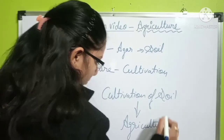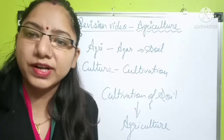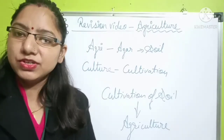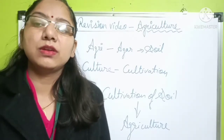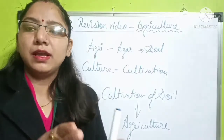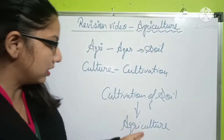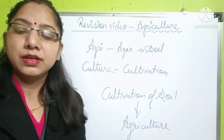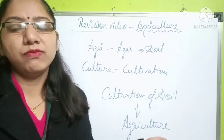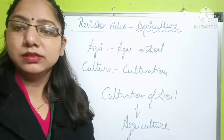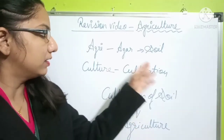Here we can say the cultivation of soil, or whatever cultivation is done in the soil — whether it is cropping, animal rearing, or any other things — these all are included in agriculture.